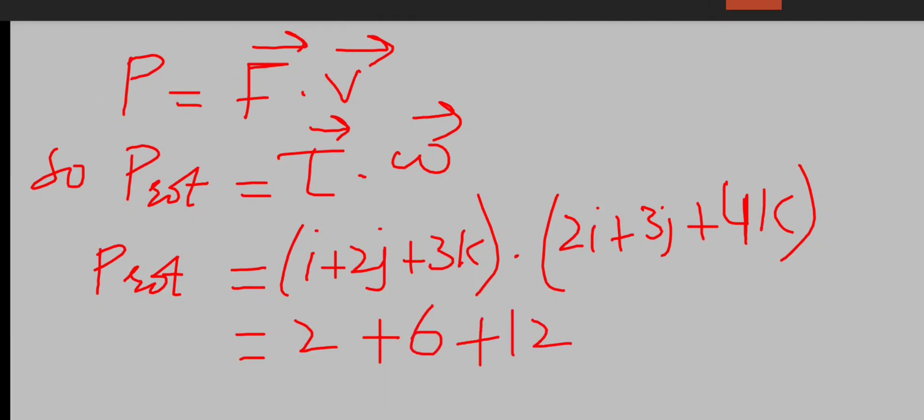As we know that i dot i is equal to j dot j is equal to k dot k is equal to 1. The value of i dot i, the value of j dot j is also 1, the value of k dot k is also 1.